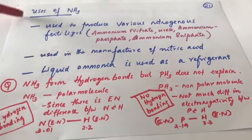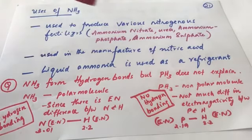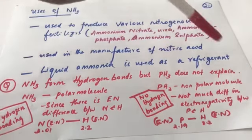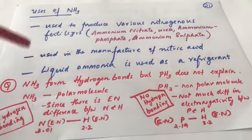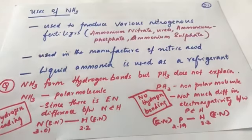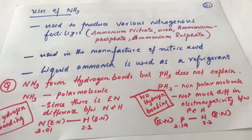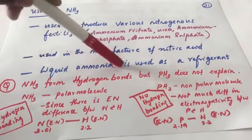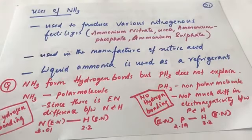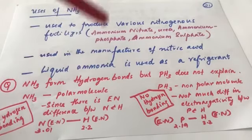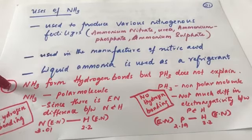Uses of ammonia: it is used to produce various nitrogenous fertilizers such as ammonium nitrate, urea, ammonium phosphate, and ammonium sulfate. It is used in the manufacture of nitric acid. Liquid ammonia is also used as a refrigerant.